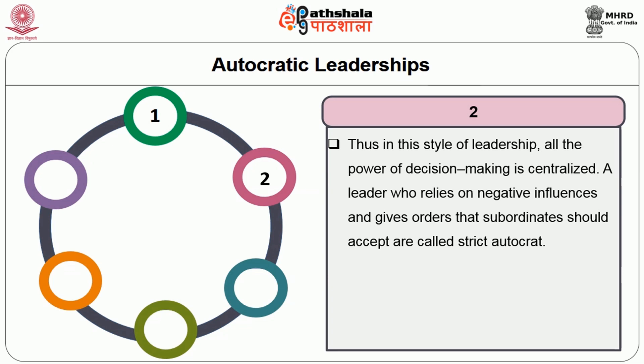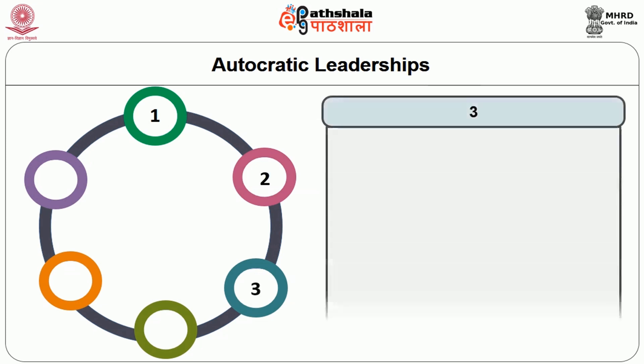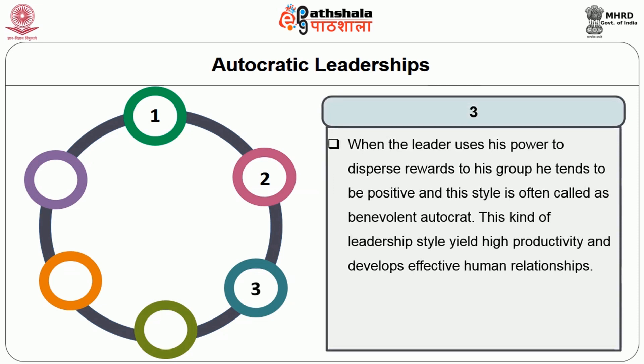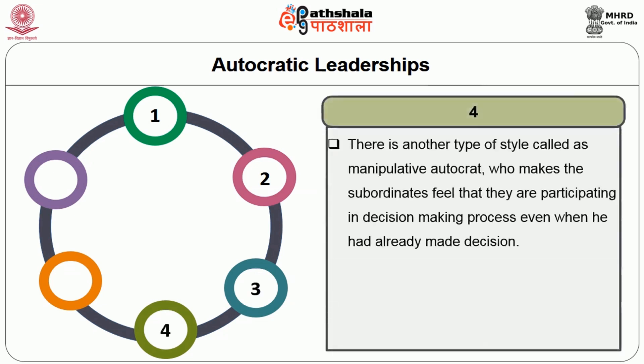A leader who relies on negative influences and gives orders that subordinates must accept is called a strict autocrat. When the leader uses his power to disperse rewards to his group, he tends to be positive and this style is often called benevolent autocrat. Manipulative autocrat makes the subordinates feel that they are participating in decision making even when he had already made the decision.